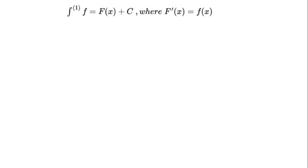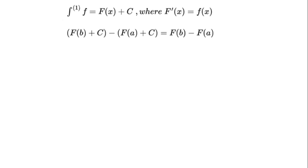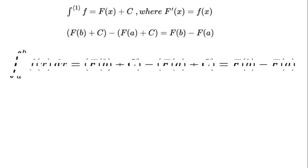The first antiderivative is the integral of f to the power of 1 equals F(x) plus c, where F prime(x) equals f(x). The constants cancel: F(b) plus c minus (F(a) plus c) equals F(b) minus F(a). That's the fundamental theorem of calculus. Our formula nailed it.